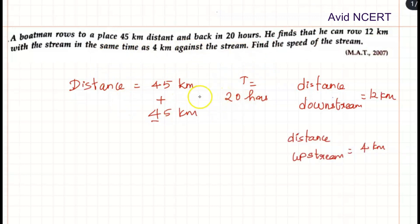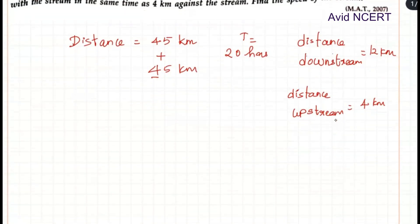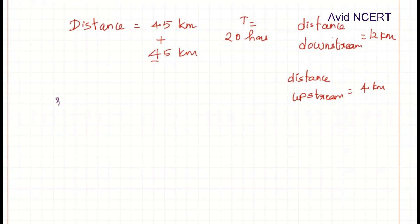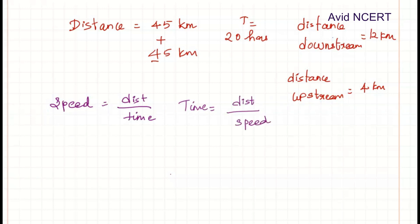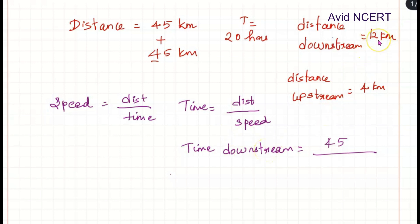Since the total time for the complete journey is 20 hours, let's express everything in terms of time. Using the formula speed equals distance divided by time, time equals distance divided by speed. To find the downstream time: distance is 45 km divided by downstream speed, which is 12 divided by x, where x is the time.